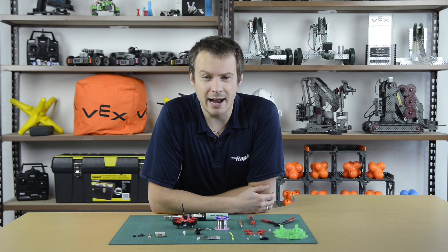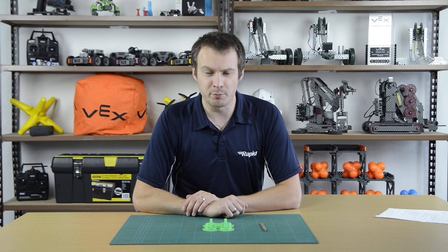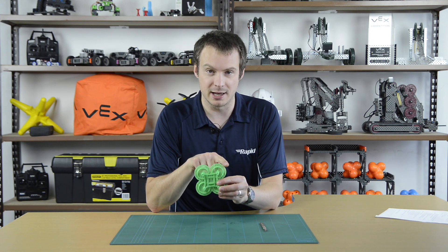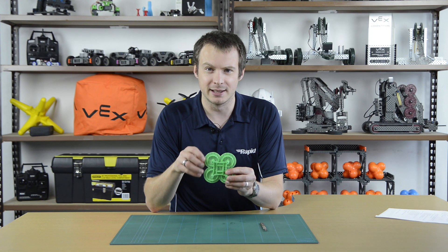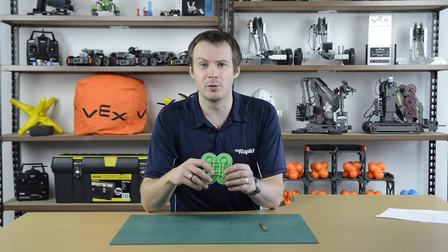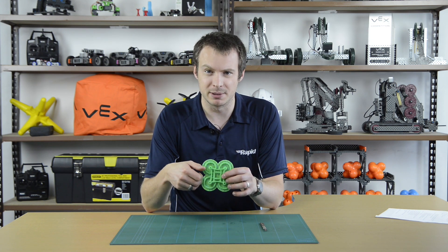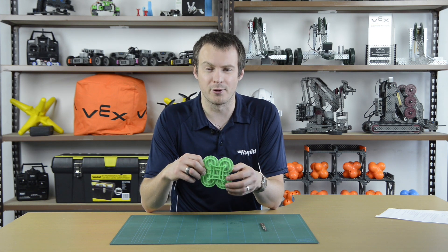Now the first thing we're going to do is show you how to clean up the 3D printed frame. Once you've printed your frame, which will be upside down, it will have all of this support material and raft on it that needs to be removed. So the raft can just be peeled away and the support material will need to be cleaned off with a sharp knife. Some of it will be able to be peeled away but some of it will need cutting off.